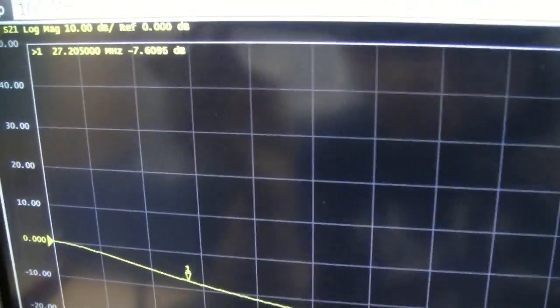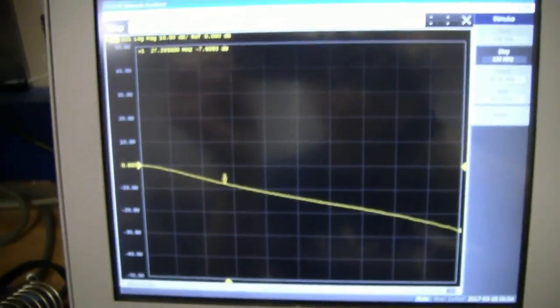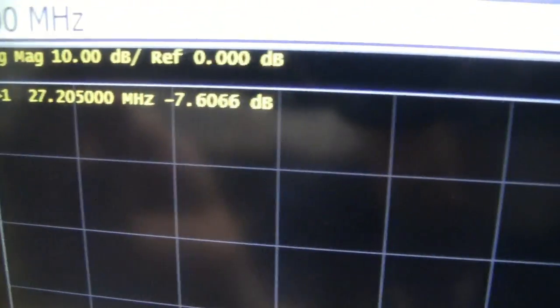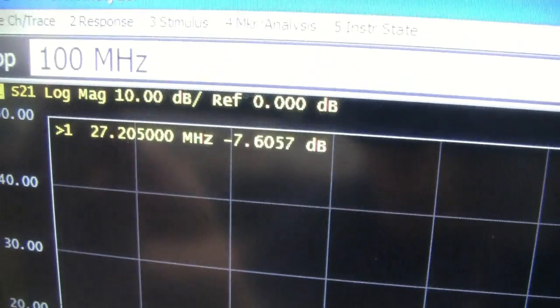So we'll take a look over here, and we've got, once again, the same span, and not as much attenuation over here. We're looking at 27.205 MHz. We have about negative 7.6 dB.